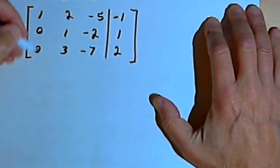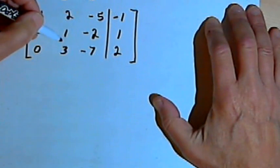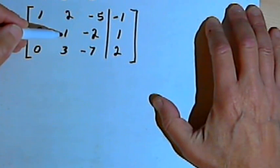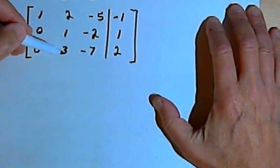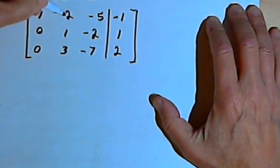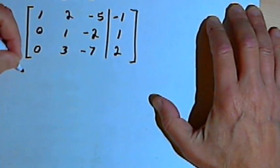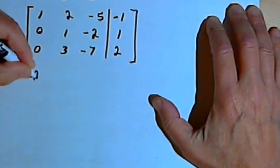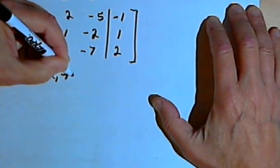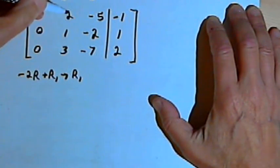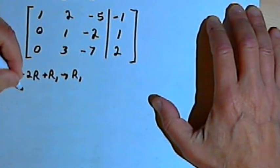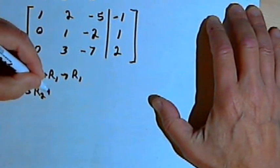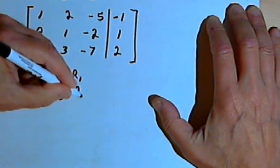Now the first column is taken care of, we go on to the second column. For the second column, we want the element in row 2, column 2 to be a 1 — and there is a 1. So we can go on to turning the other elements into zeros. I've got a 2 in row 1, so I'm going to multiply row 2 by negative 2 and add that to row 1 for the new row 1. And I'll also multiply negative 3 times row 2 and add that to row 3 to make the new row 3.